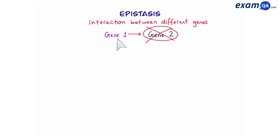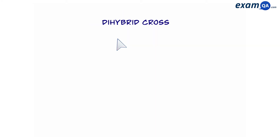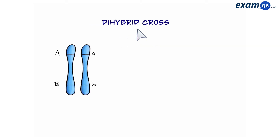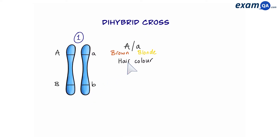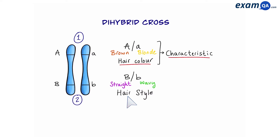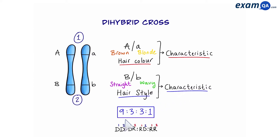Before we look at that, let's have a quick reminder of what a dihybrid cross was. So here we have two genes: gene 1 codes for hair colour and gene 2 codes for hairstyle. We can see that each gene is responsible for a different characteristic, and we know that we get a ratio of 9 to 3 to 3 to 1. This ratio happens when you have a dihybrid cross between two heterozygous parents. We can refer to this as a normal dihybrid cross.